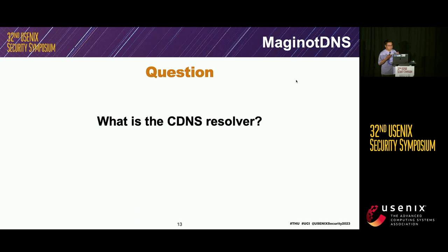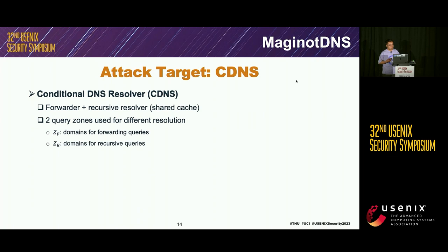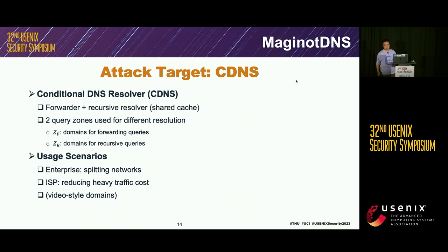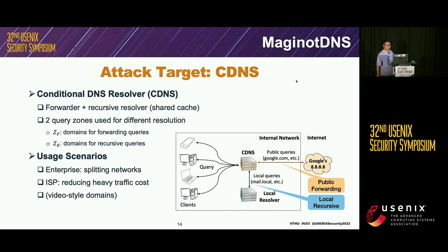Since our attack target is CDNS resolvers, I will explain what CDNS is. CDNS is a conditional DNS resolver with both recursive and forwarding query modes. Between the forwarder and the recursive resolver, they share a cache, and there are two query zones to identify the different resolution modes: ZF and ZR. CDNS is widely used to split networks for enterprises or to forward certain domains to reduce traffic cost. As shown on the right, CDNS forwards global queries to Google and does local recursive queries for local domains.